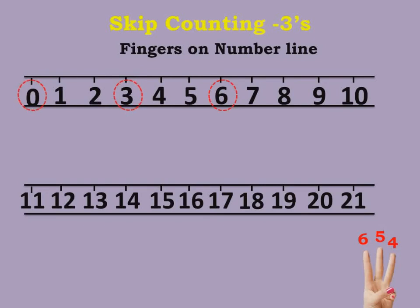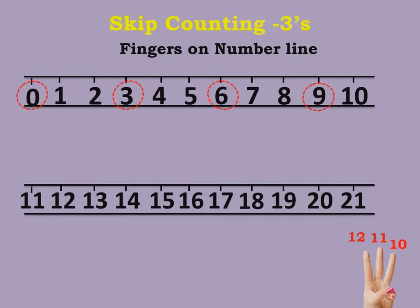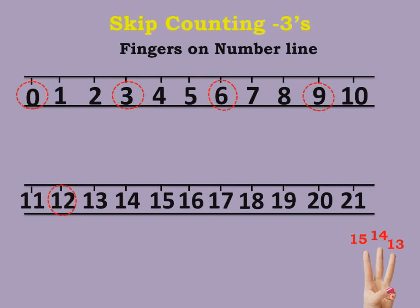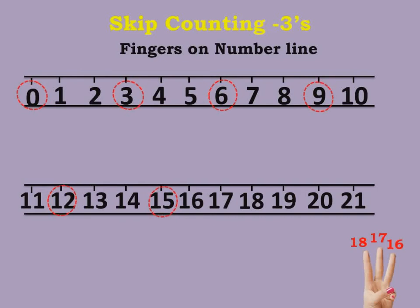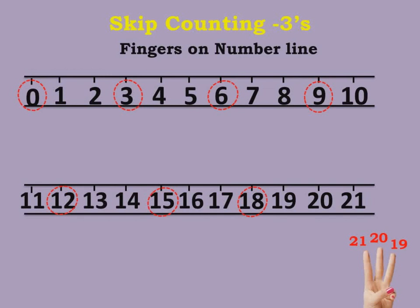After 6, count three numbers: 7, 8, 9 — so you will be on 9. After 9, count 10, 11, 12 — so you will be on 12. After 12, count 13, 14, 15 — so the next number is 15. After 15, count 16, 17, 18 — so the next number is 18. After 18, count 19, 20, 21 — so you will be on 21.